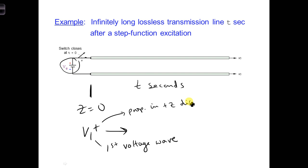After T seconds, the leading edge of the wave will have propagated a distance of Up*t meters. You can check this by making the units work out. Up is units of meters per second, and time is in units of seconds, so then you end up with meters.